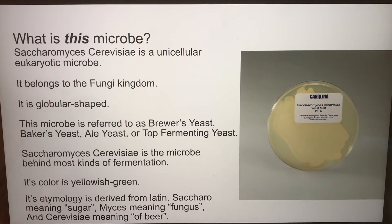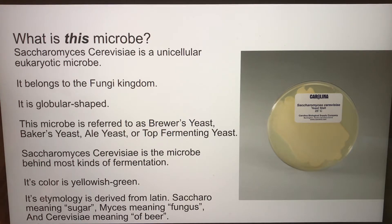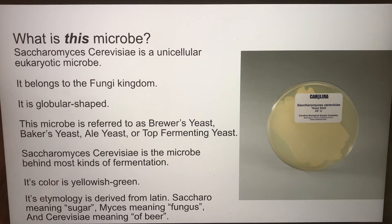Saccharomyces cerevisiae is a unicellular eukaryotic microbe. It belongs to the fungi kingdom and is globular shaped. This microbe is referred to as brewer's yeast, baker's yeast, ale yeast, or top fermenting yeast. It is the microbe behind most kinds of fermentation. Its color is yellowish green. Its etymology is derived from Latin: saccharo meaning sugar, myces meaning fungus, and cerevisiae meaning of beer.